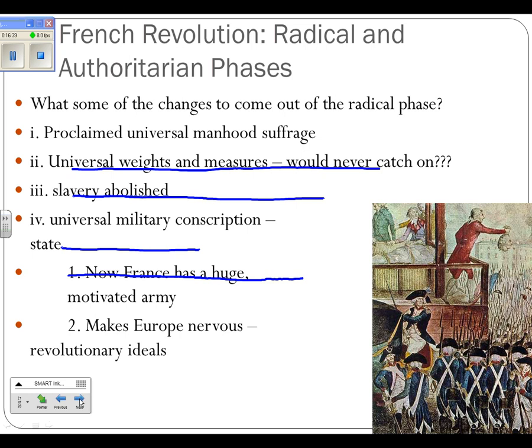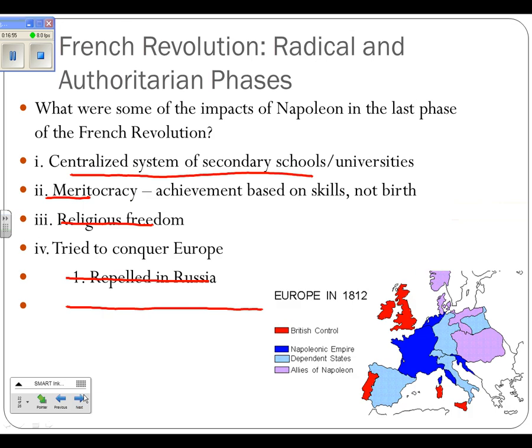But all this makes the rest of Europe nervous. They see what's going on in France — radical ideas, kings and aristocrats being beheaded. It scares them. So this ushers the French Revolution into the radical phase, and now we're in the authoritarian phase.